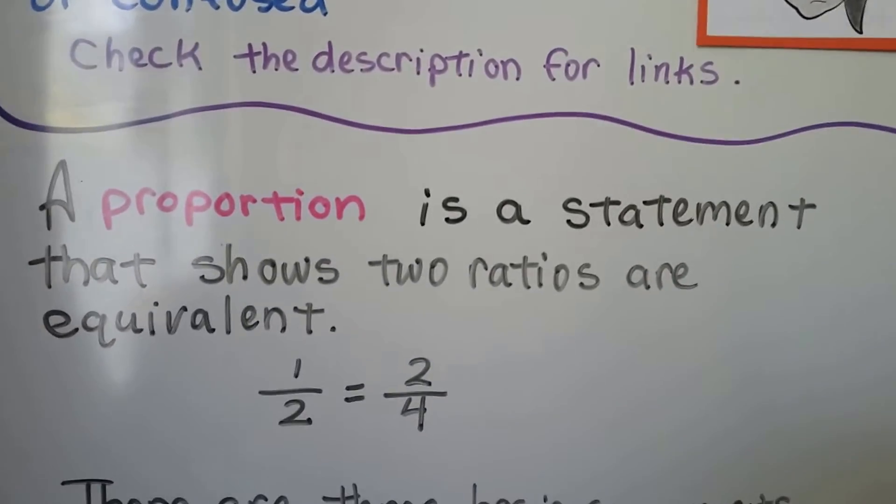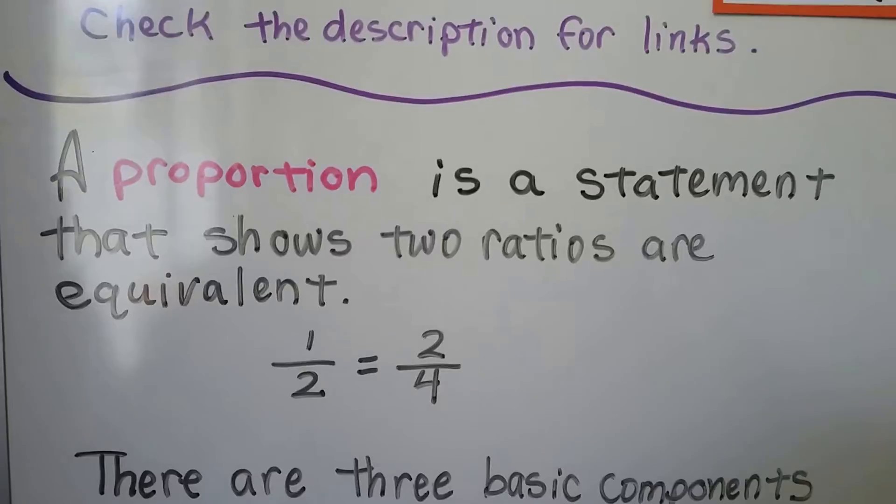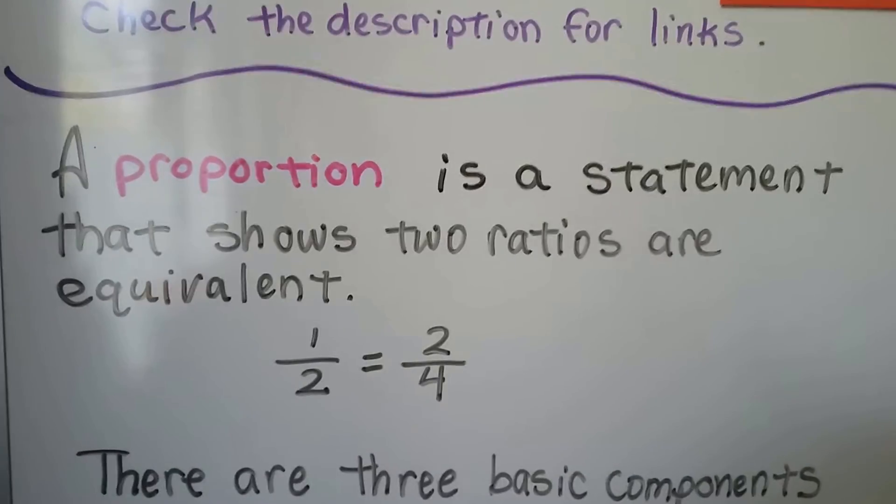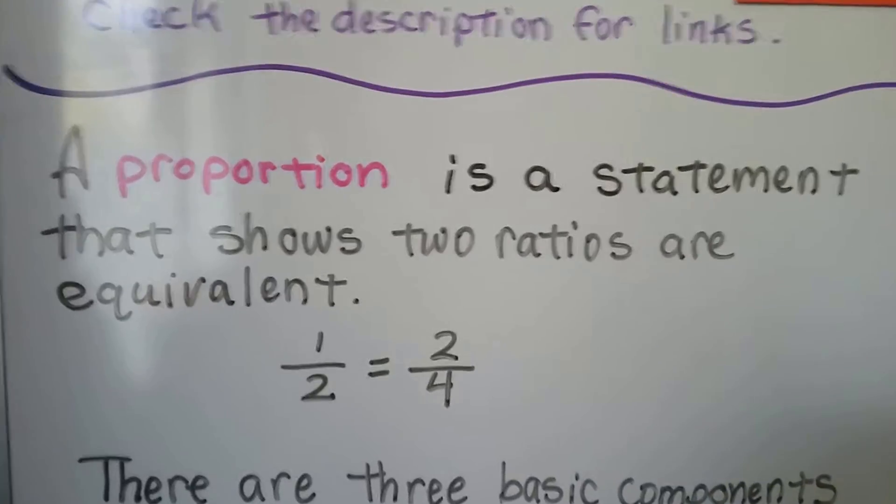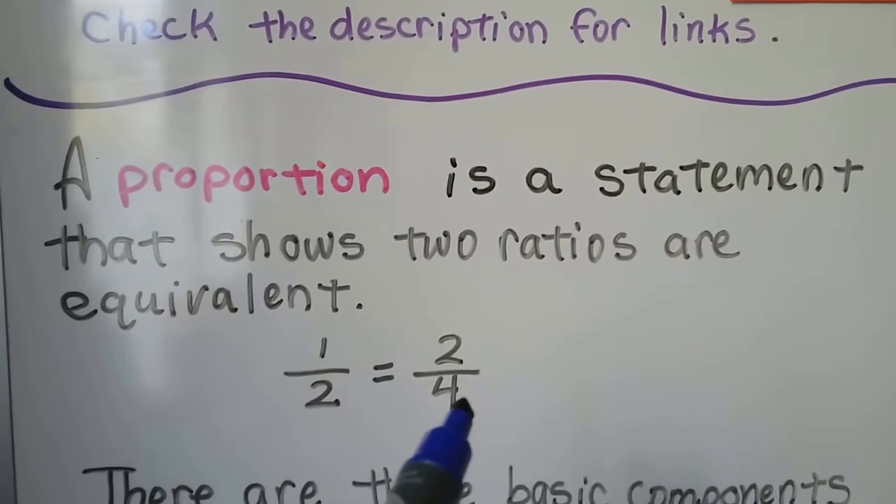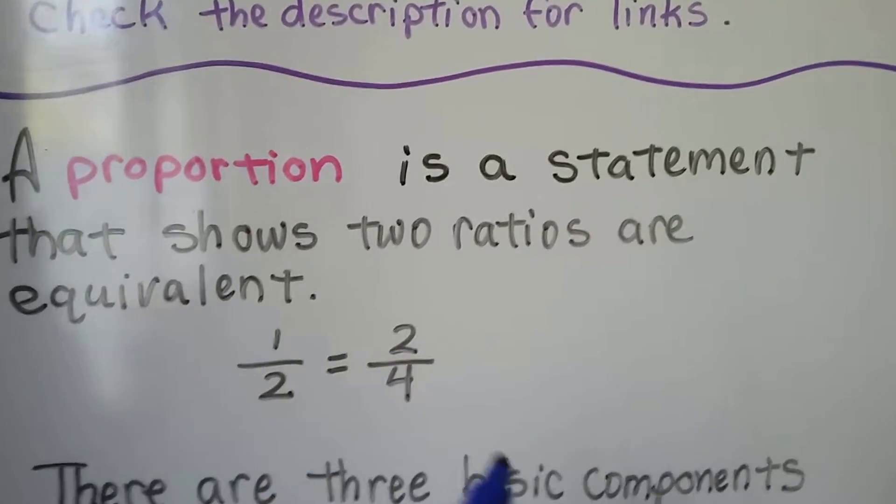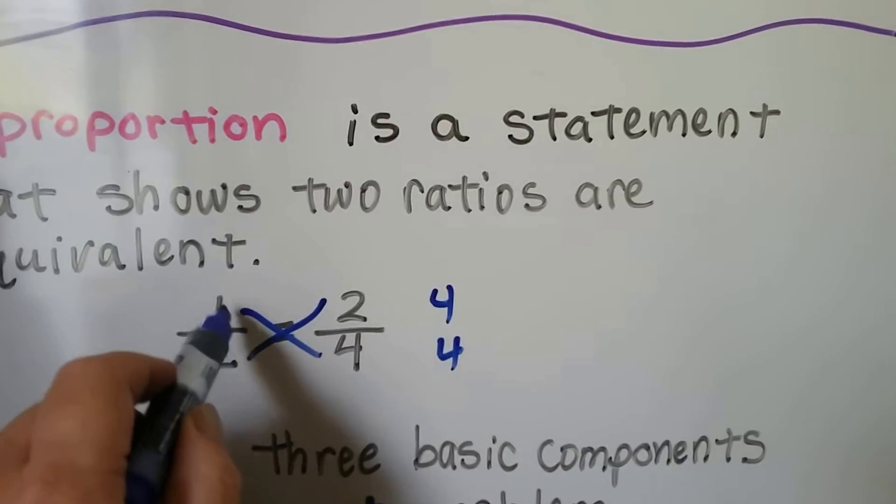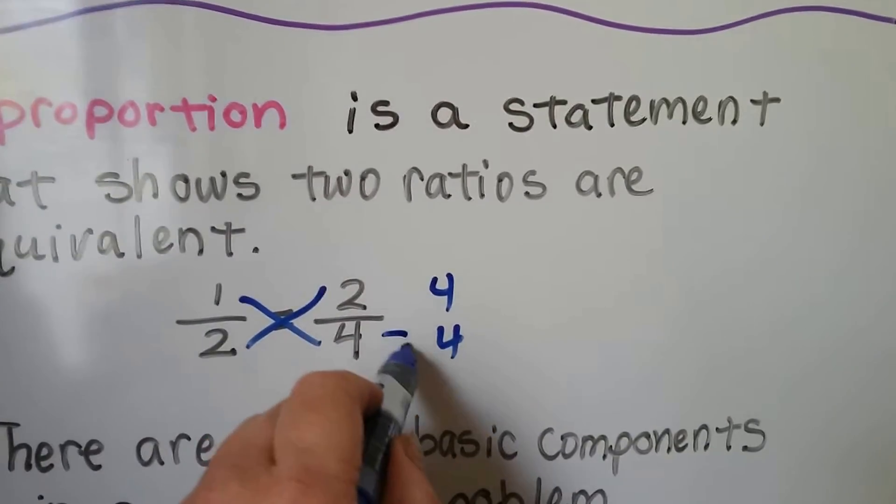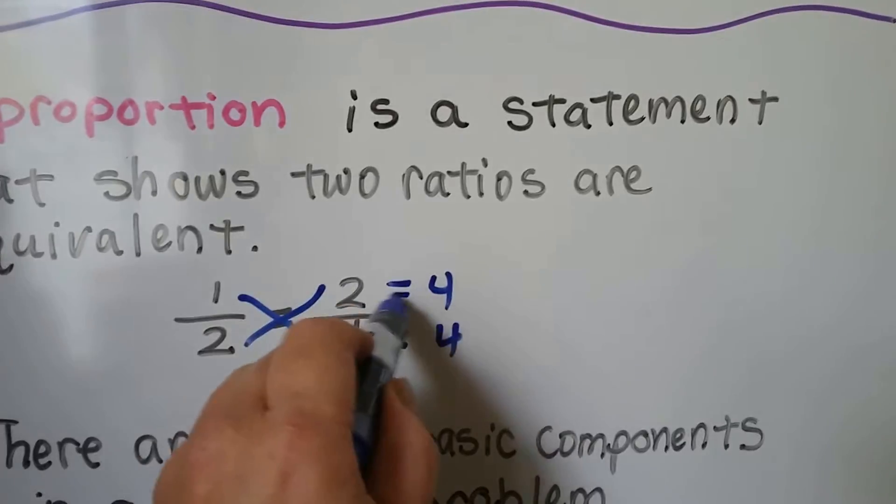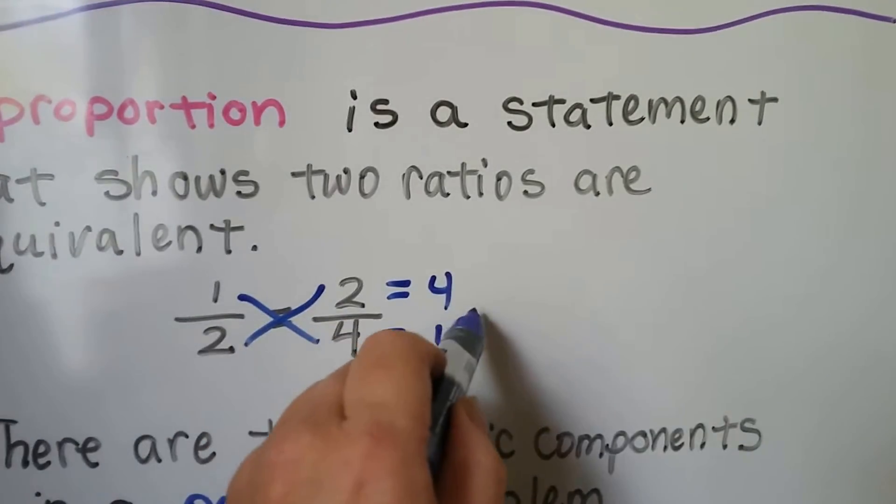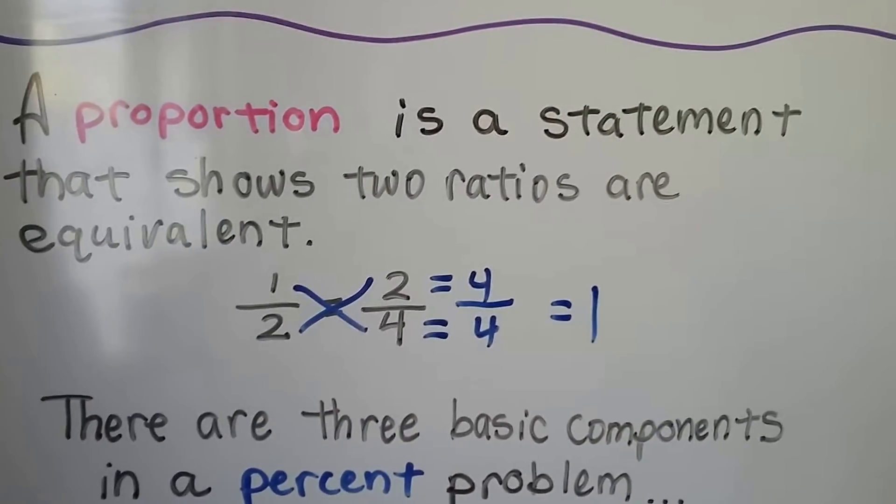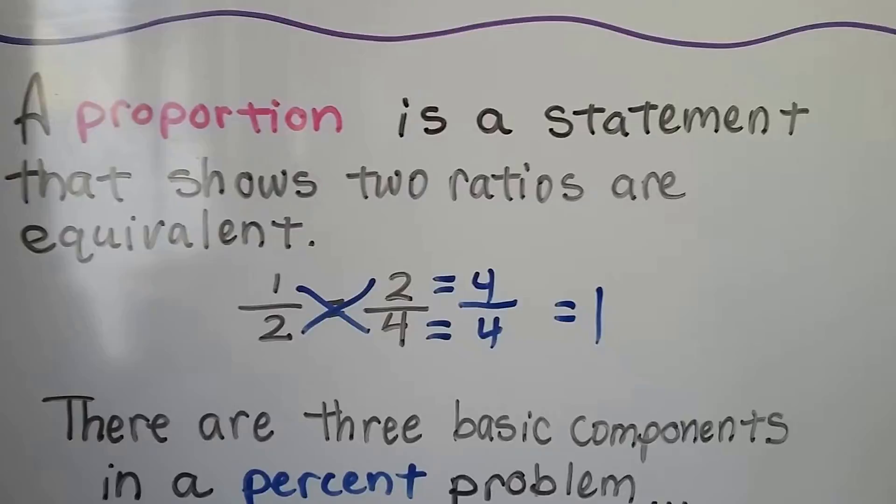A proportion is a statement that shows two ratios are equivalent. We've talked about proportions before. One half is equal to two fourths. What we do is cross multiply. We say 1 times 4 is 4 and 2 times 2 is 4, and if we get a 4 when we cross multiply, and we get the same numerator and denominator, four fourths, which is equal to 1, then it's in proportion. It's an equivalent ratio.